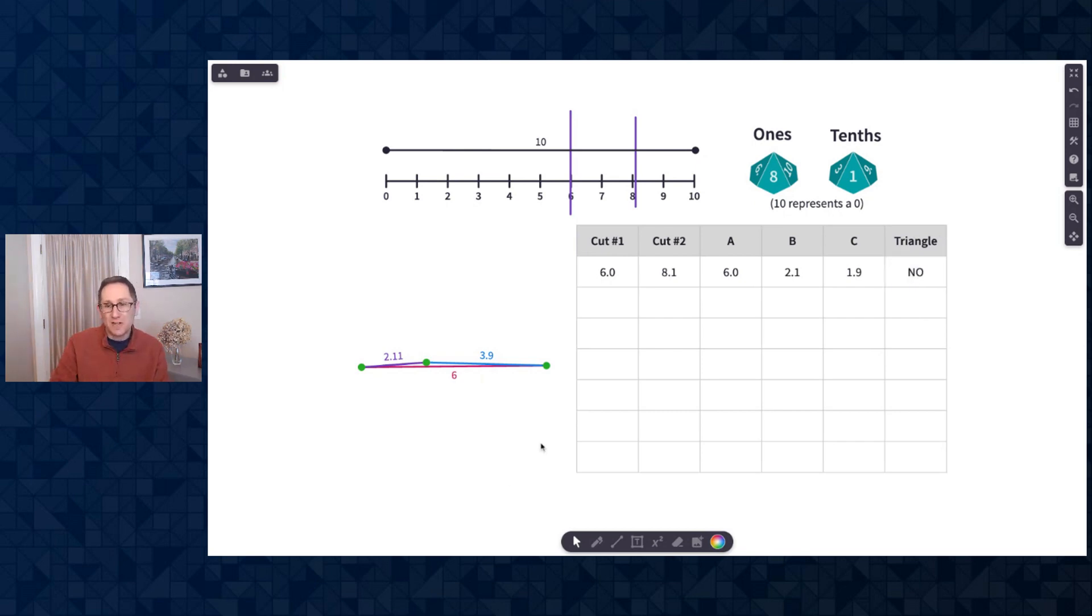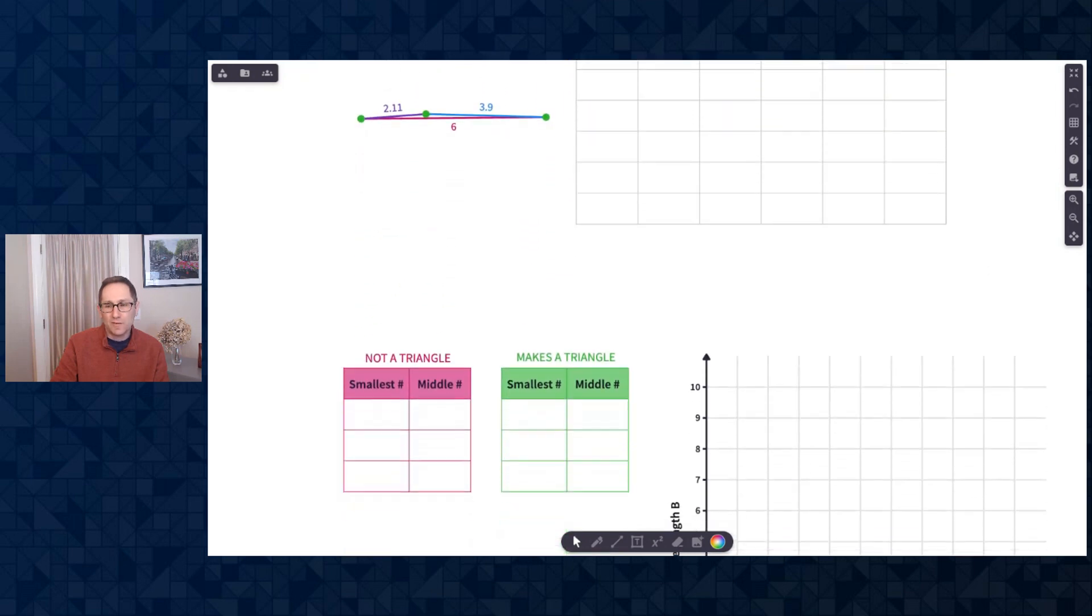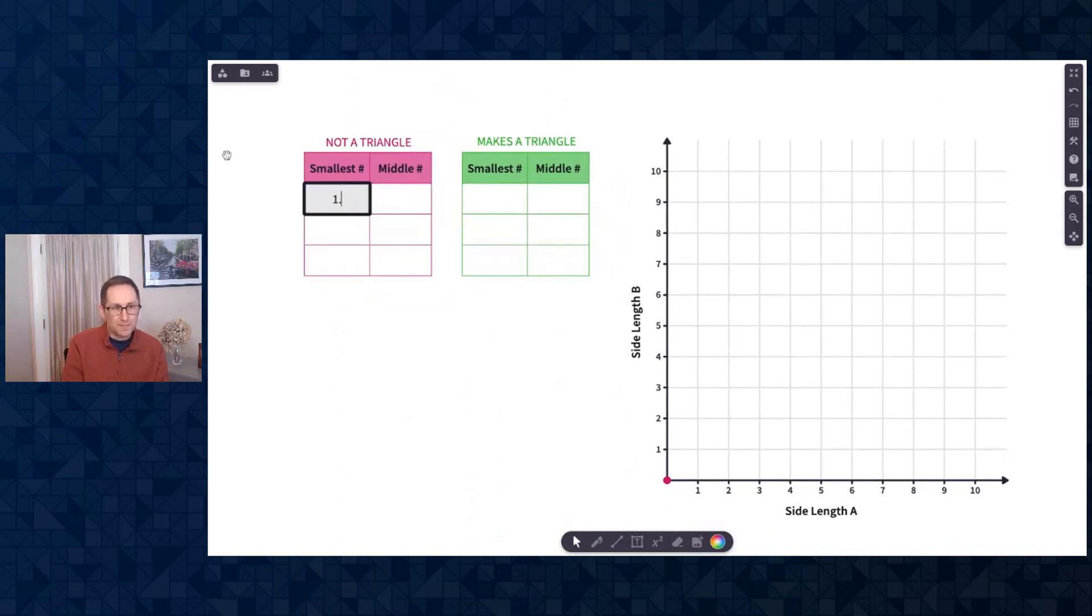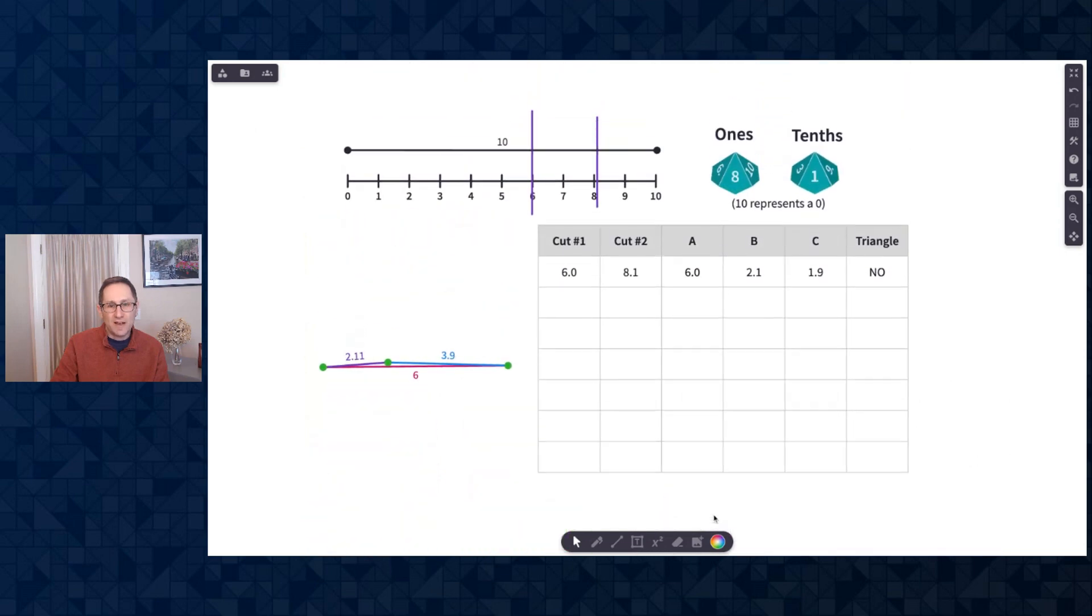And then I'm going to scroll down on this polypad, and I'm going to plot my smallest length and middle length into a table. So 1.9 and 2.1. So you can see here in the red table are going to be the ones that don't make a triangle. So I entered 1.9 and 2.1 into this red table, and that red point got plotted on the graph at 1.9 and 2.1. That does not make a triangle. And then I'll do it again.